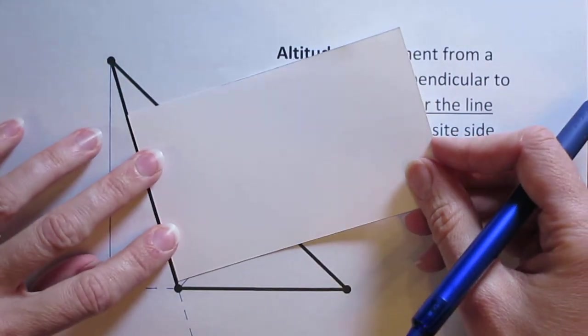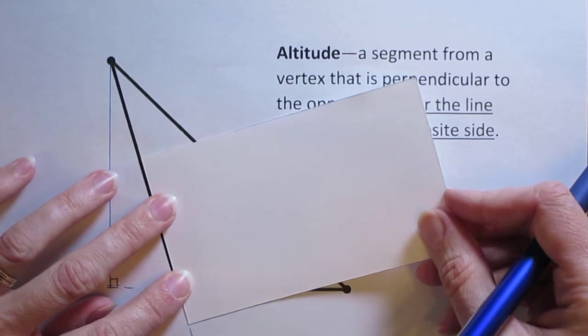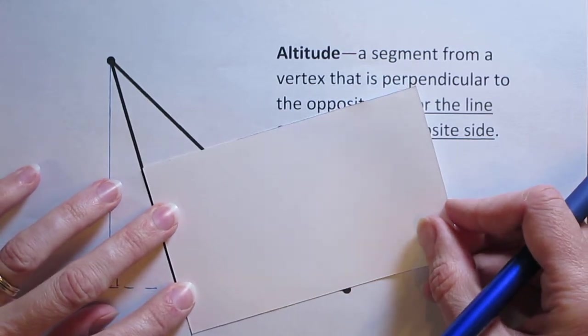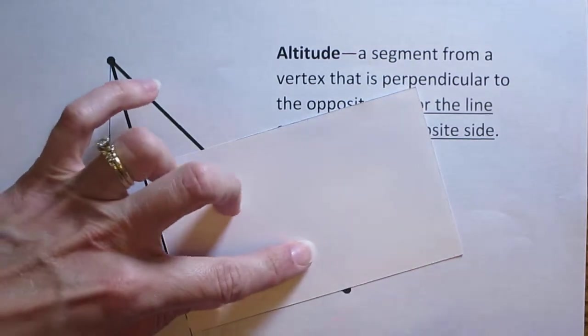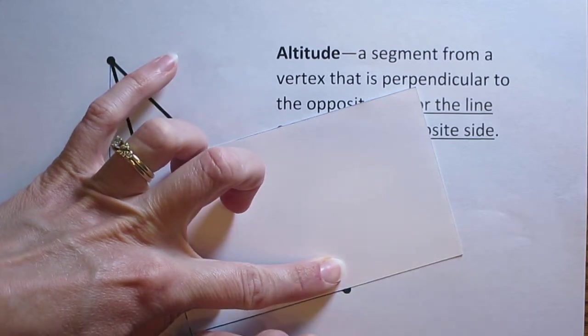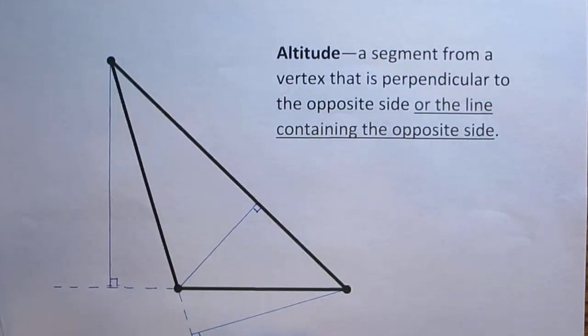Now I'll take my note card and again continue to slide my note card along that side of the triangle until it hits that vertex. And I can draw that in and there is an altitude.